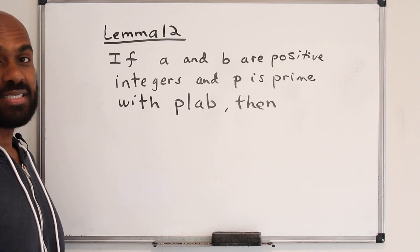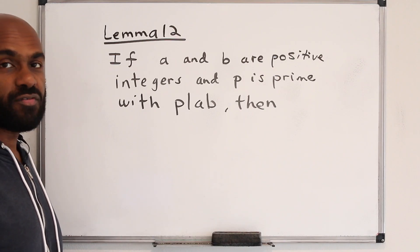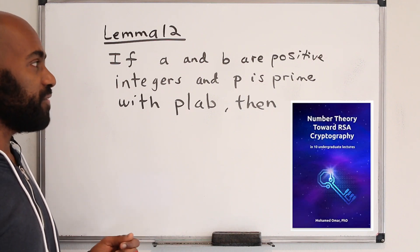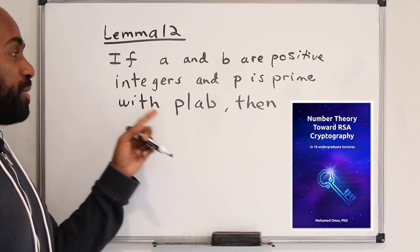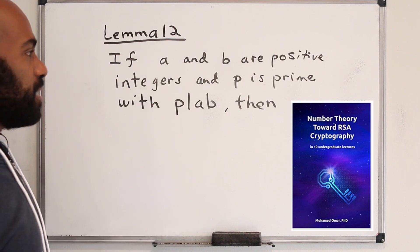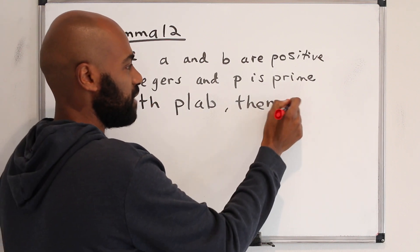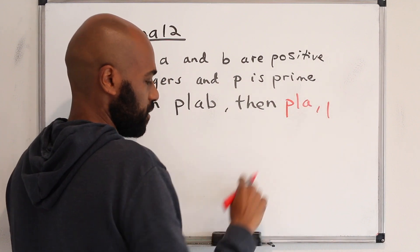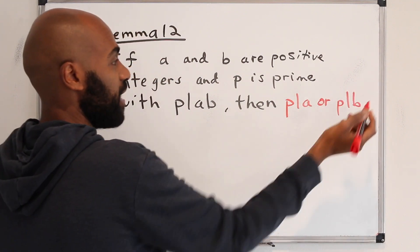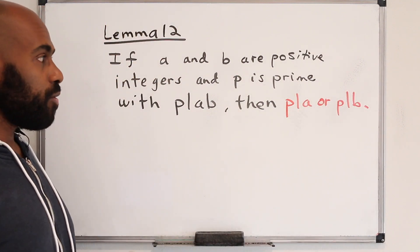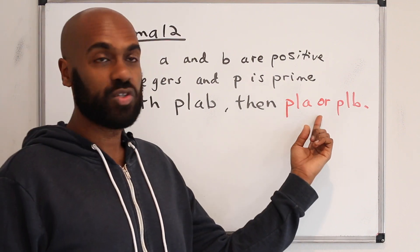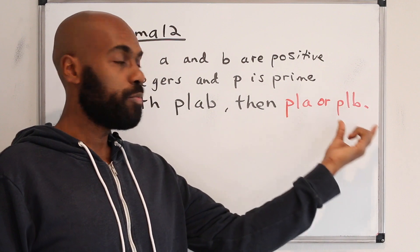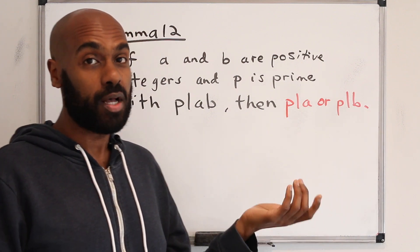One of the first things we need to establish is Lemma 12, which says that if a and b are positive integers and p is a prime with p dividing the product of a and b, then p has to divide one of the two factors — p divides a or p divides b, or possibly both.